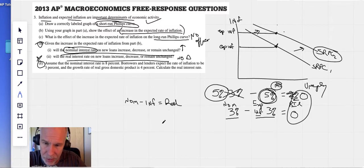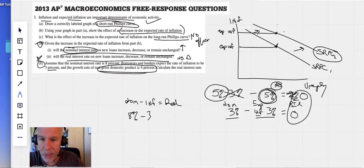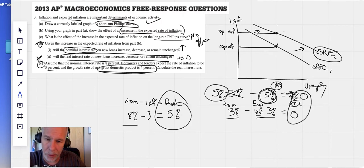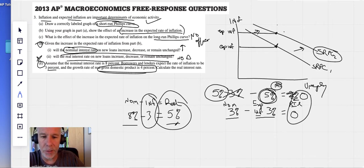All right. Part E, assume that the nominal interest rate is 8%. Borrowers and lenders expect the rate of inflation to be 3%, and the growth rate of real GDP is 4%. This we don't need. This is just extra information, right? Nominal minus inflation equals real. Our real interest rate here is 5%. If they charge 8% for a loan and the price of inflation goes up by 3%, they will make 5% on their money. I hope that's clear and you can see that. All right, guys.